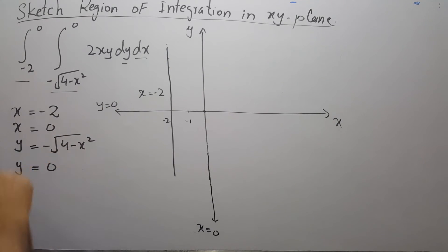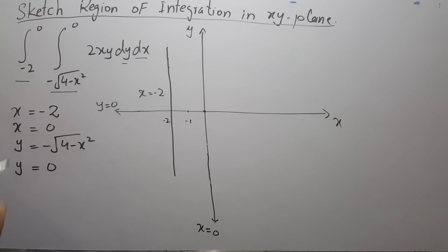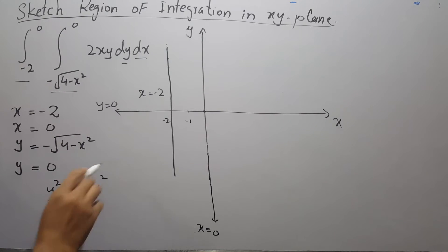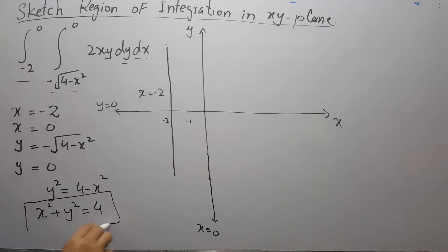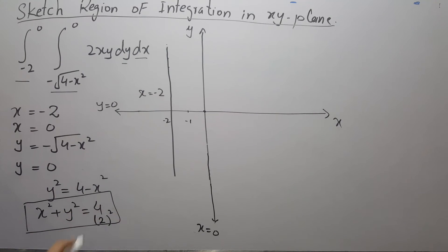Now y = -√(4 - x²) is usually hard to understand from the graph. If you square both sides and move x² to the other side, you can see this is an equation of a circle with radius 2, since we can write 4 as 2². So the radius is 2.